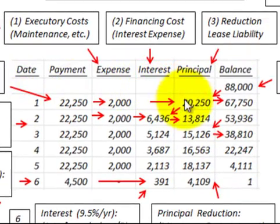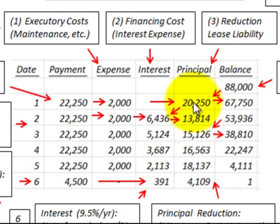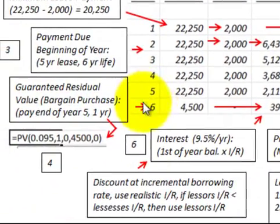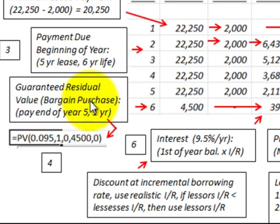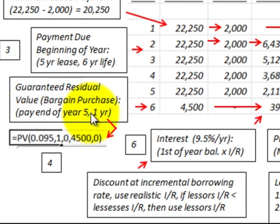Moving to the amortization schedule, the beginning principal reduction amount is $20,250. The schedule also includes a guaranteed residual value at the end of the lease worth $4,500, which could also be represented as a bargain purchase option, but here we treat it as a guaranteed residual value paid at the end of year five.